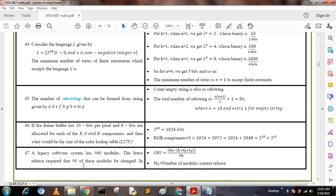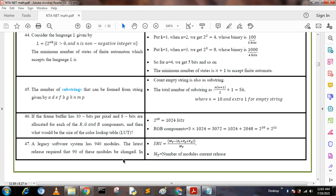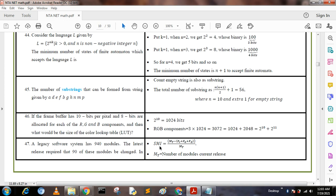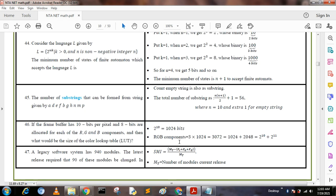Question 47: A legacy software system has 940 modules. The latest release required that 90 of these modules were changed. In addition, 40 new modules were added and 12 old modules were removed. Compute the software maintenance index for the system. Software maintenance index SMI = (mt - fc - fa - fd) / mt, where mt is the number of modules in the current release, fc is the number of modules changed, fa is the number of modules added, and fd is the number of modules deleted.